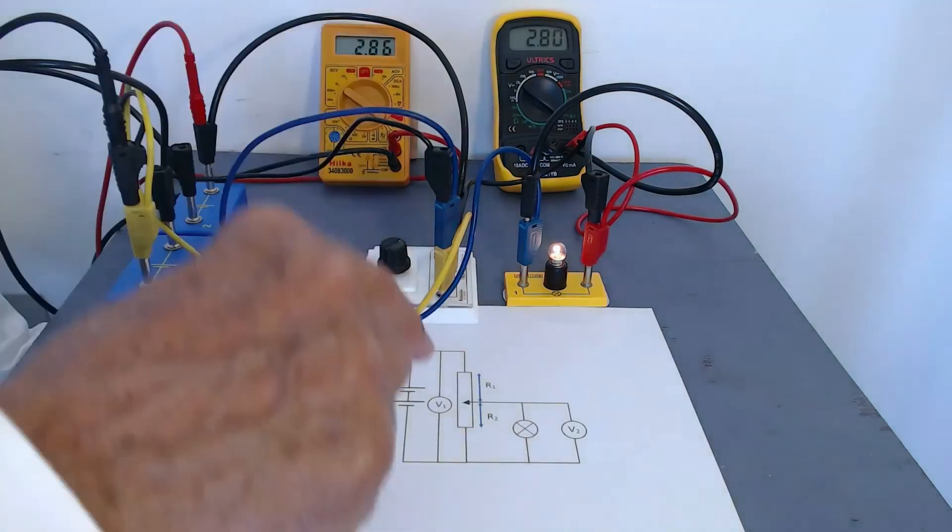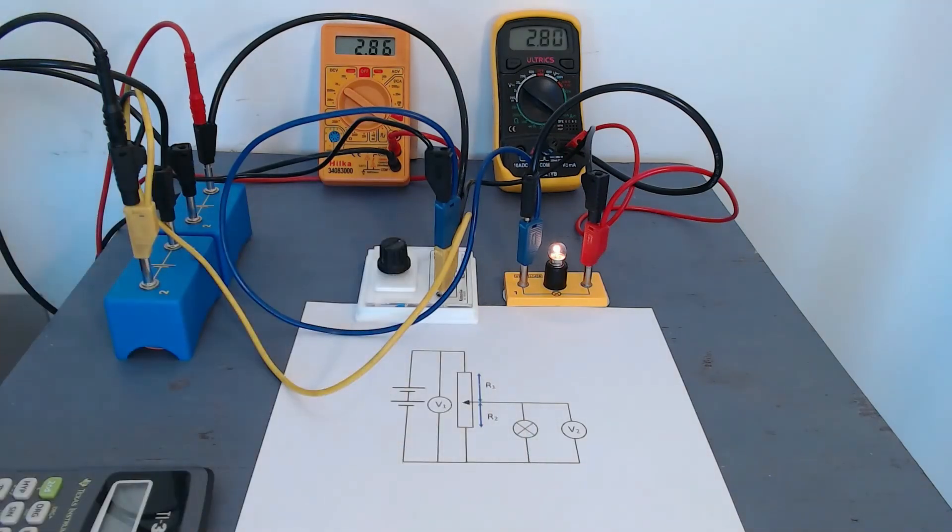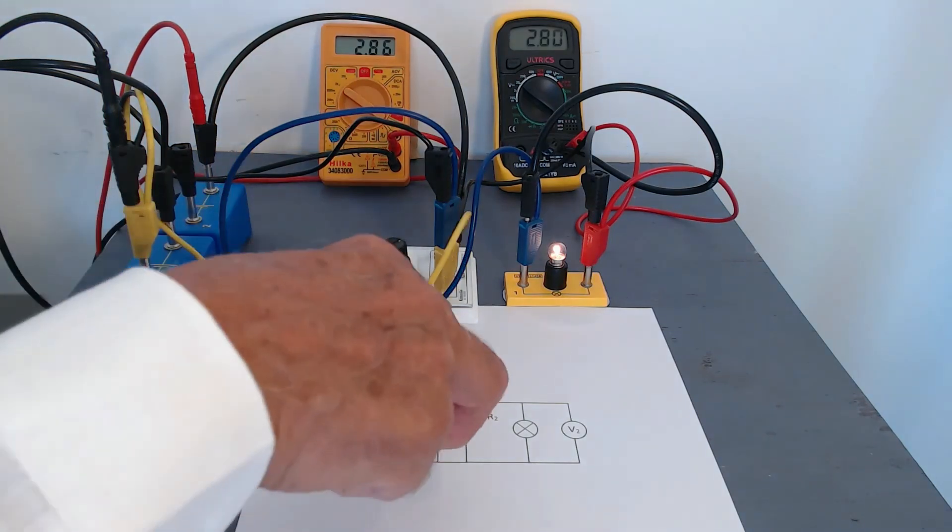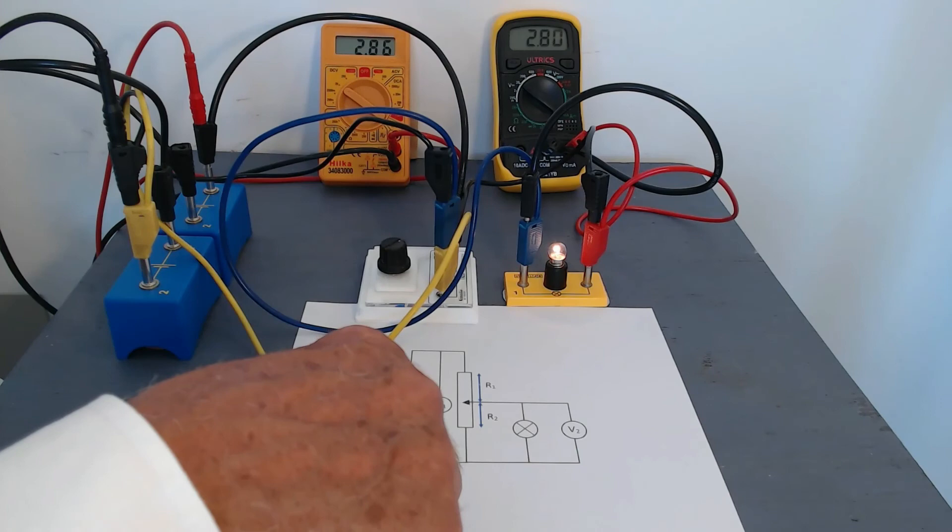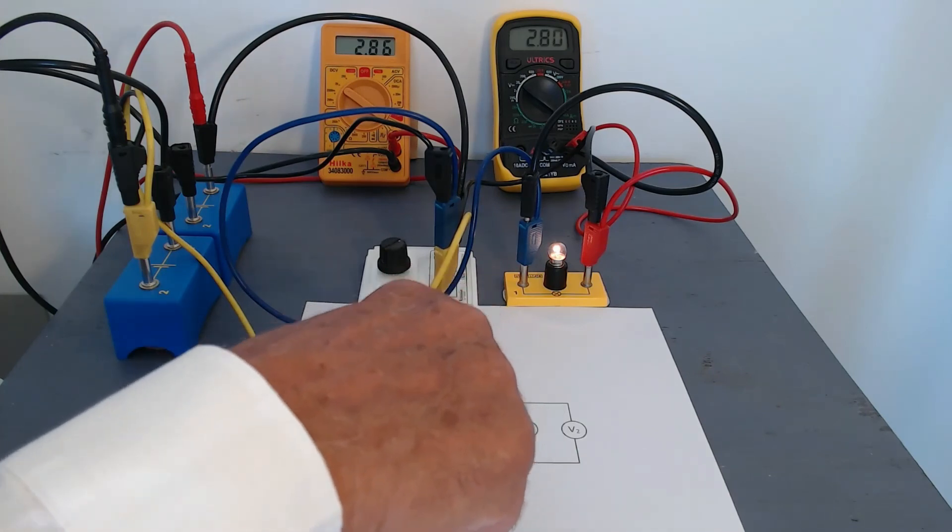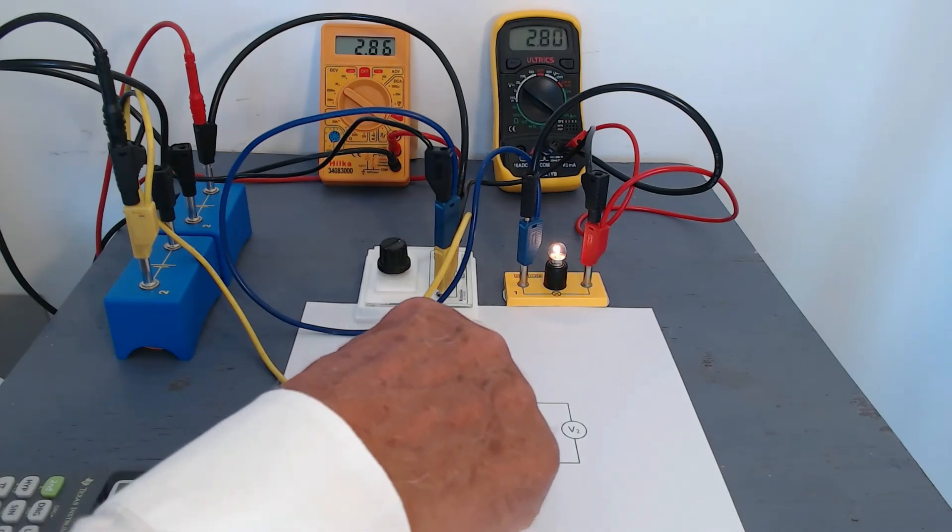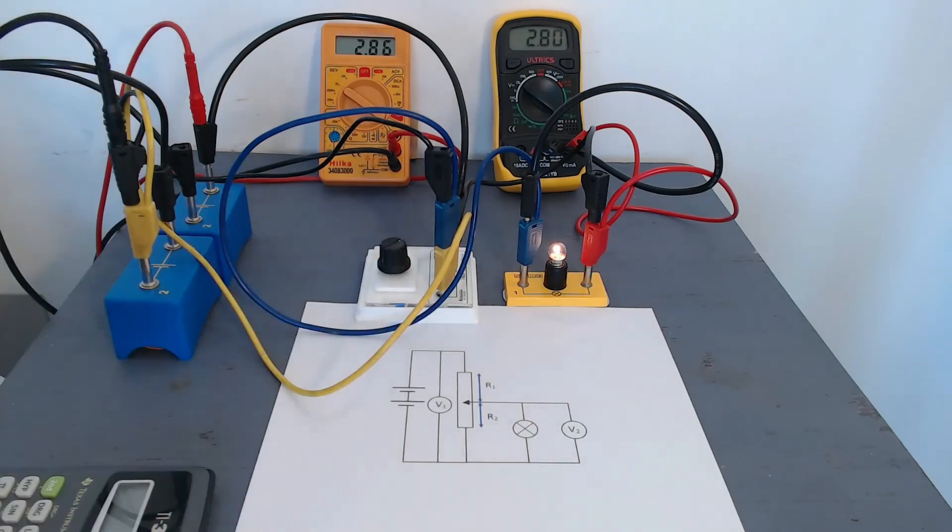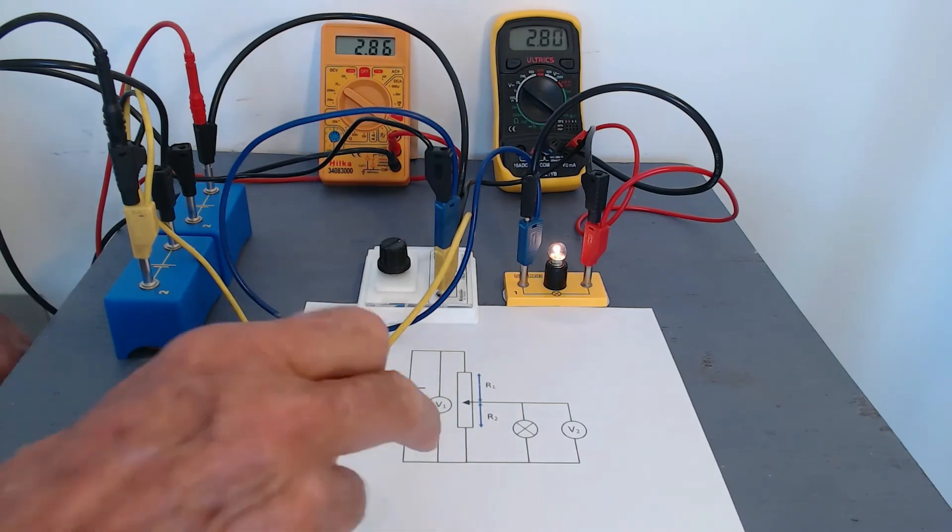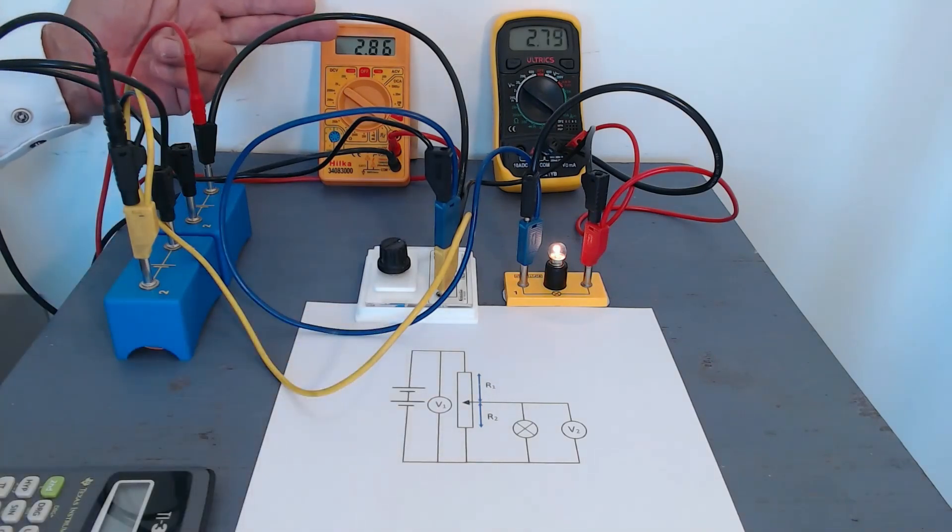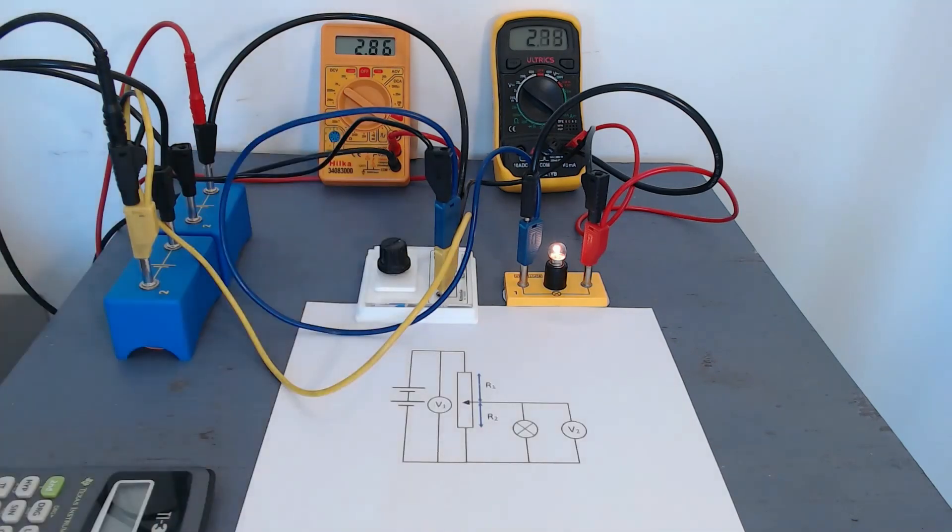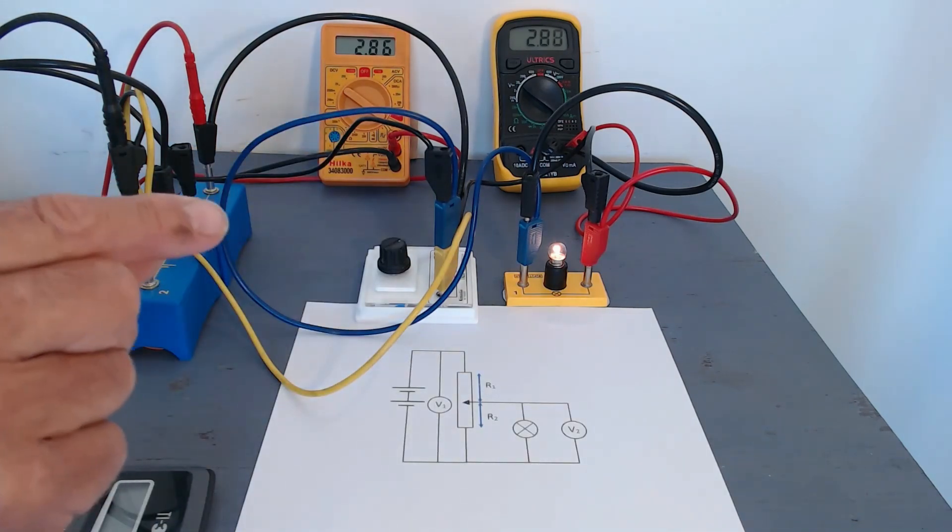And I said at the beginning this is called a potential divider circuit, because we're dividing the potential V1 between R2 and R1, between the two parts of this variable resistor. But the total input potential is essentially constant throughout. It's V2 that is varying, so hence the name potential divider.